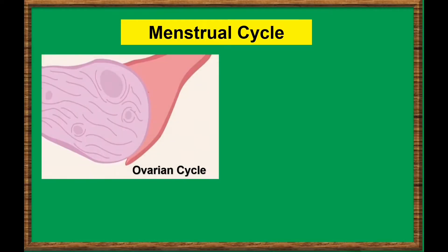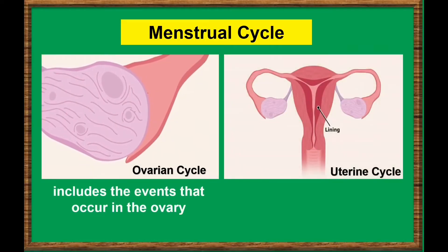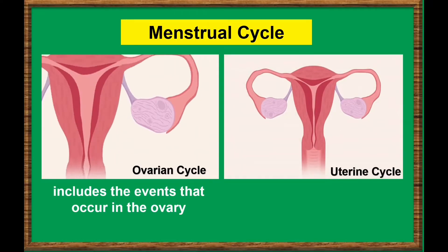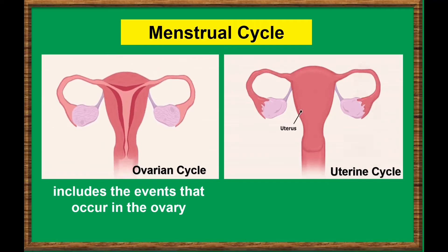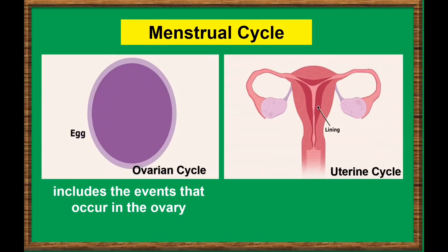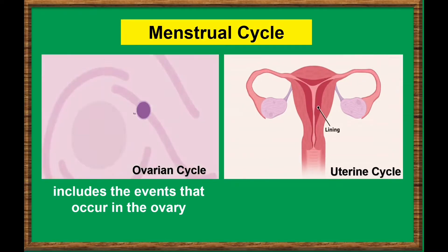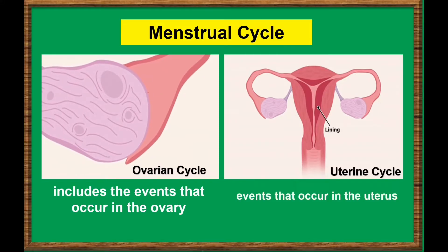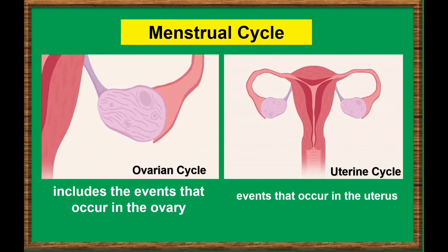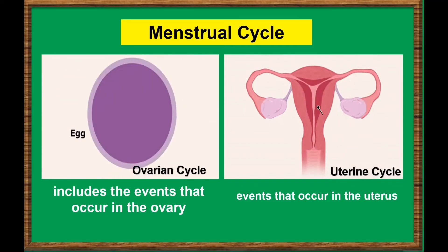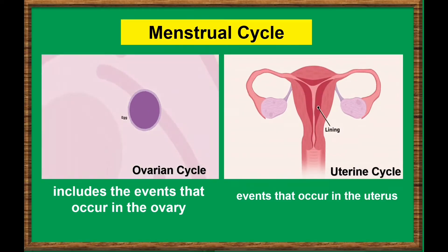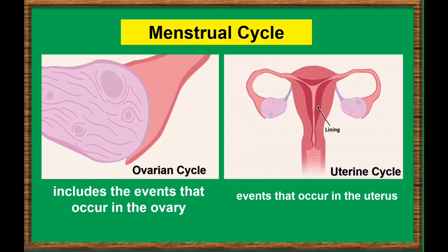The menstrual cycle can be divided into two cycles, called the ovarian cycle and the uterine cycle. The ovarian cycle includes the events that occur in the ovary, like ovulation, while the uterine cycle refers to the events that occur in the uterus, like menstruation. The two cycles are closely related, so they are described together and referred to as the menstrual cycle.